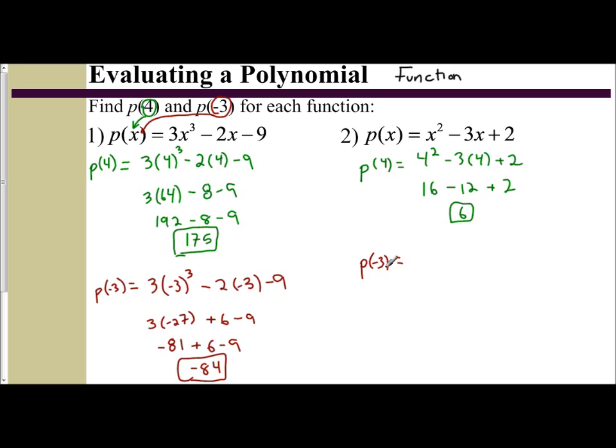And I do the same thing for P(-3). I take negative 3 and plug it in for my x. Now when you're plugging in a negative with an exponent, you want to make sure you put it inside of a parenthesis. So (-3)² minus 3 times (-3), plus 2.